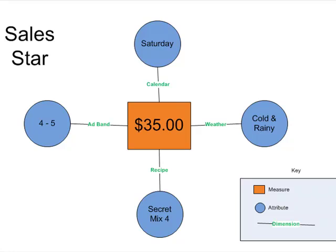Perhaps it might say something like on Monday we made fifty dollars, it was a sunny day, we used recipe five, and we did three to four dollars worth of advertising. You can see how you can change out the values and continue to read it. In fact, I could even change out the fact here in the middle.